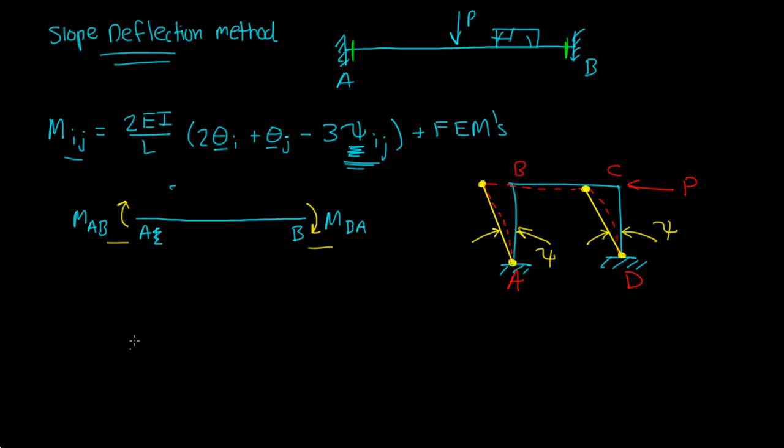If you had a frame, you'd probably set up a local coordinate system. Right? So if you had this frame, and I cut it, let's say here and here, here and here, here and here, and I'm looking at these members. I have this member, I have this member, and I have this member.